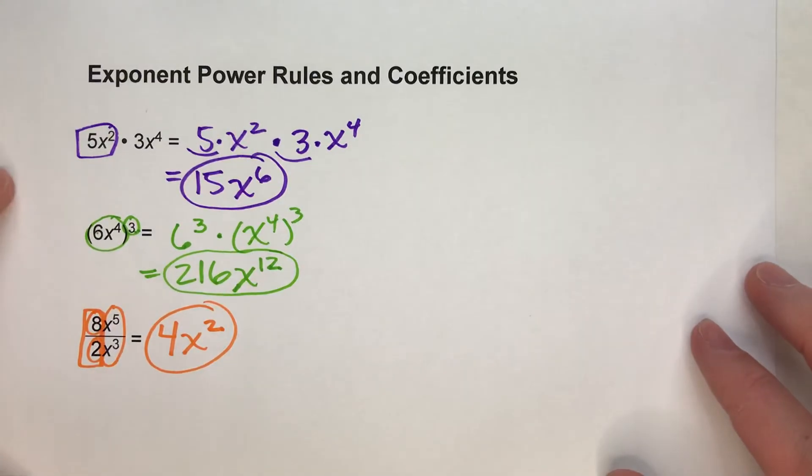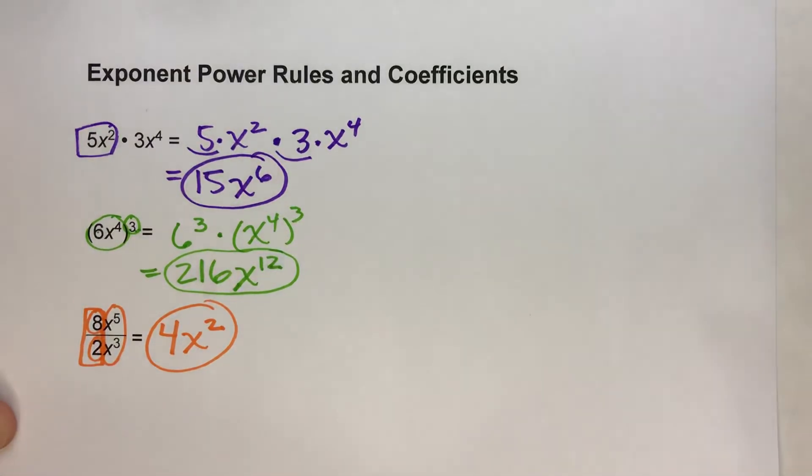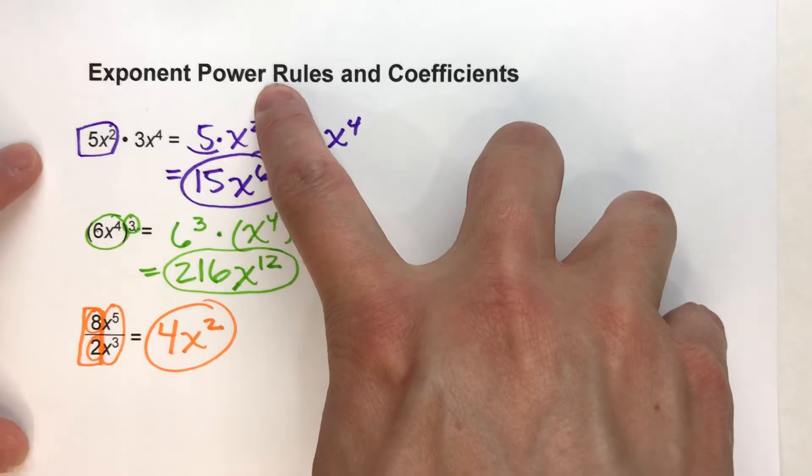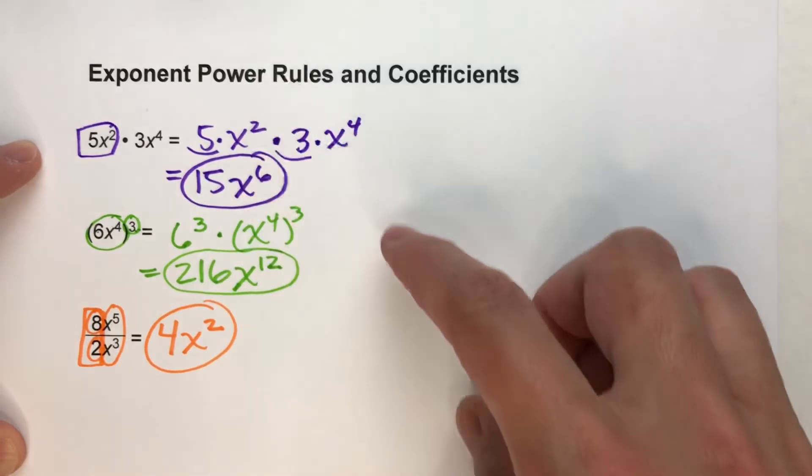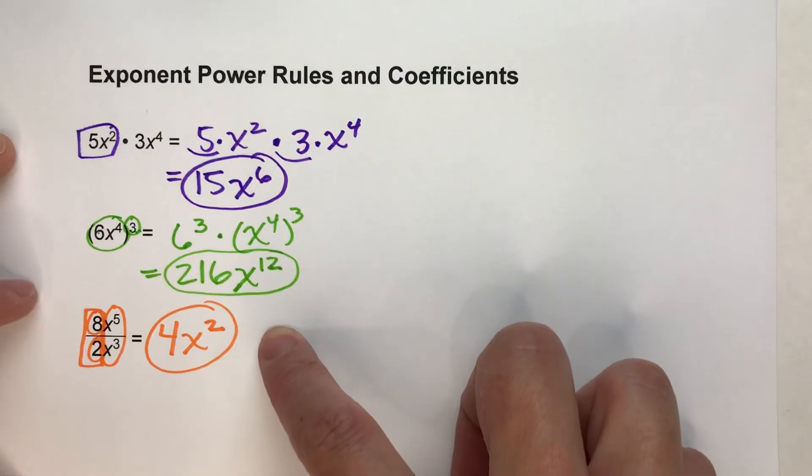So as you can see, these aren't particularly difficult, but they are tricky because you have to work with different rules. Not just the power rules, but also just basic arithmetic rules. So work carefully through these.